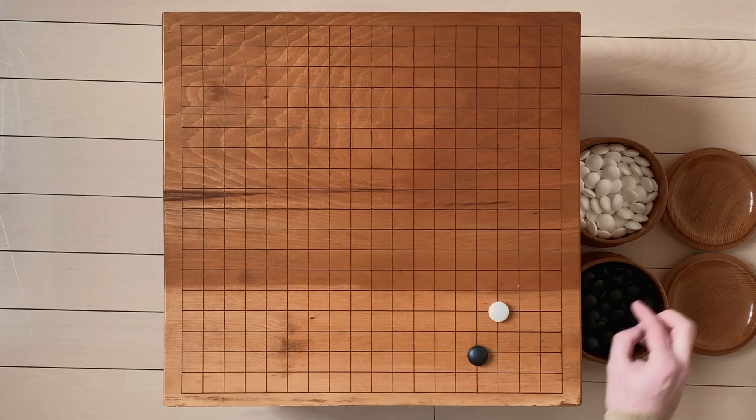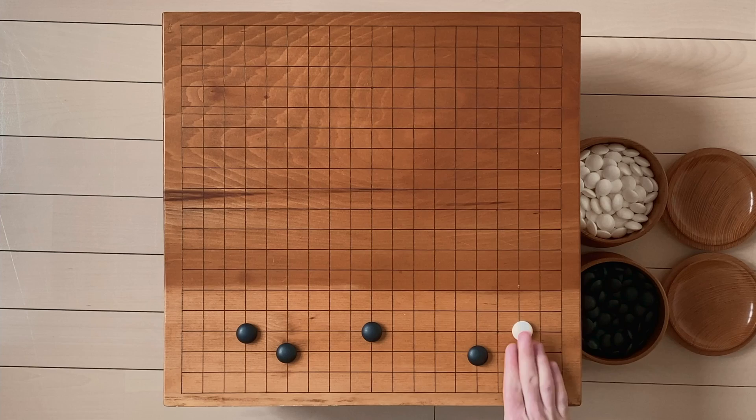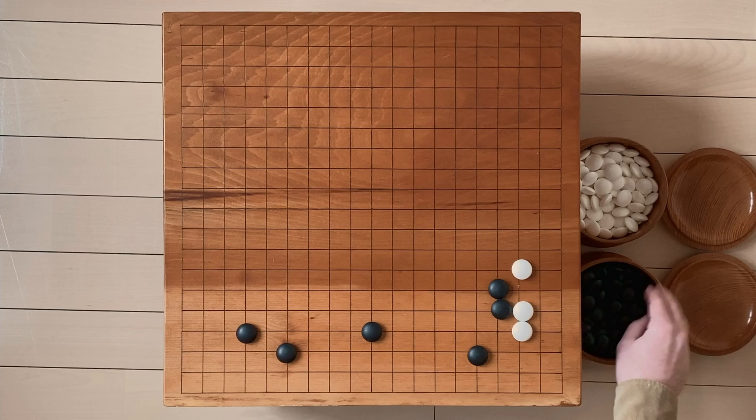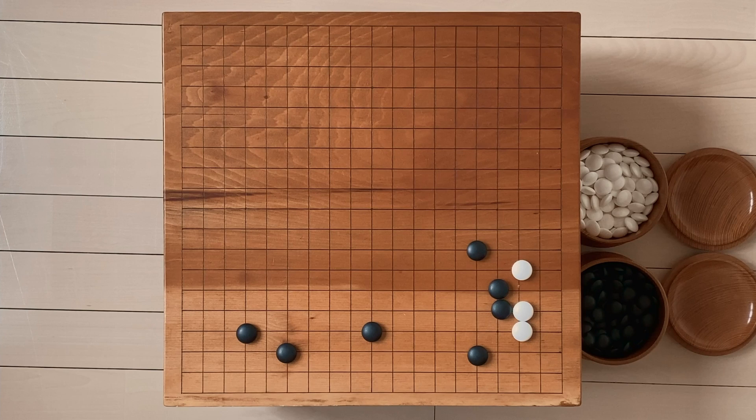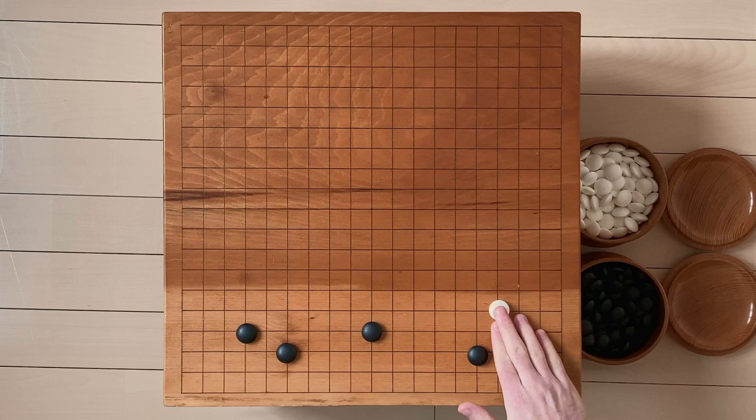For example, if black has a good setup over here, something like this. If black has a nice setup like this, then maybe you don't want to play under like that, because this press looks really good for black. He's getting a nice wall here that really looks good with the rest of his stones, right? So if black has something like this going on, maybe playing the low approach like this is not the best idea for white. If black has this setup, then the idea would be to play the high approach to limit black's moyo potential over here.